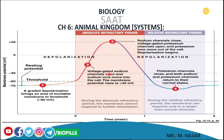Here the voltage-gated sodium channels open and the sodium ions move into the cells, so the membrane potential rises to +30 millivolts. The depolarization occurs and the transmission of the nerve impulse will happen. But before the threshold, nothing will happen. This is the principle of the threshold: all or none.